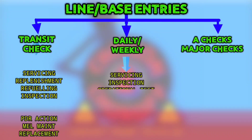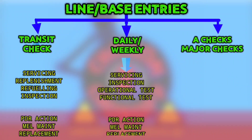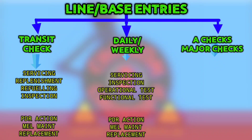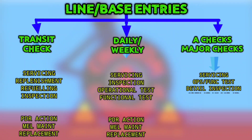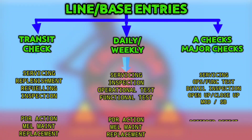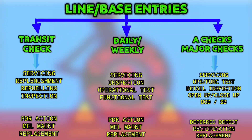In daily and weekly checks we also do inspection, operational tests, functional tests, and unscheduled items like PDR action, MEL maintenance action, or replacement of any component. Likewise in A check or major checks we are doing a lot of servicing, operational and functional tests, detail inspection, open up and close up, modification or service bulletin, deferred defect rectification, or replacement of components.